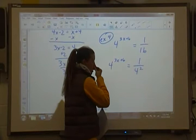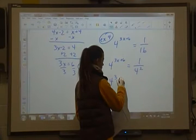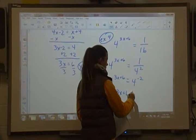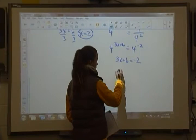Right now I have 1 over 4 squared. To move that to the numerator, that has to become a negative 2. So 4 to the 3x plus 6 is equal to 4 to the negative 2. 3x plus 6 equals negative 2. I'll add that over.